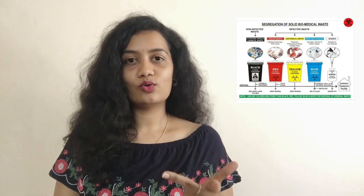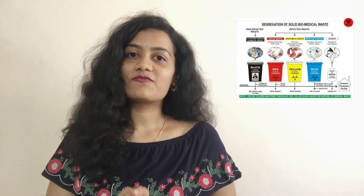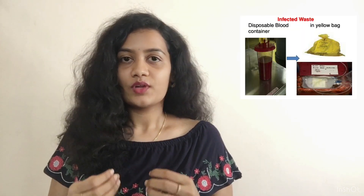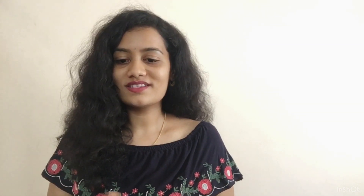To segregate biomedical waste, there is a rule of color coding with five color bags or bins: yellow, red, blue, white, and black. The yellow bag is used for microbiological waste or anatomical waste from operation theaters, like when they remove a placenta, appendix, or gallbladder. Also, soiled cloths contaminated with blood, pus, or other body fluids, and bandages, swabs, and dressings go in the yellow bag.